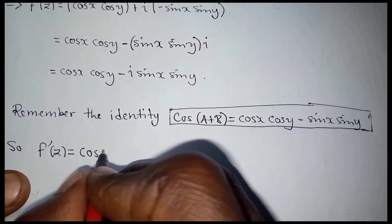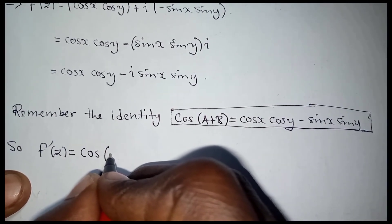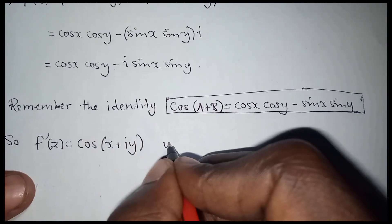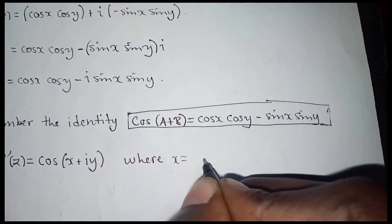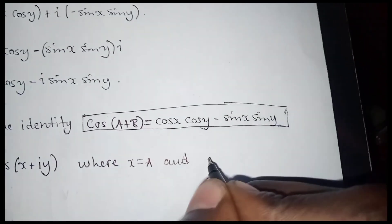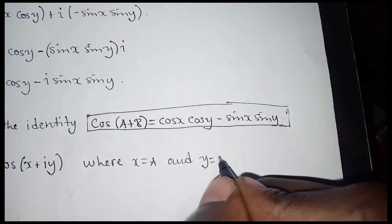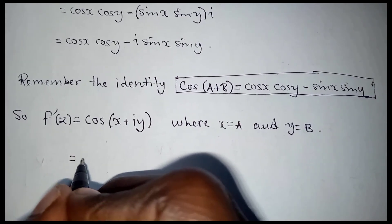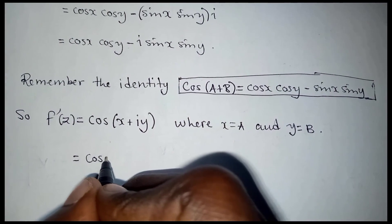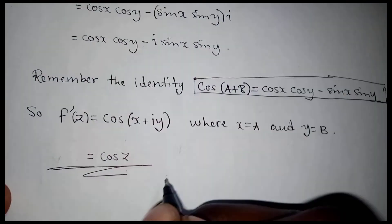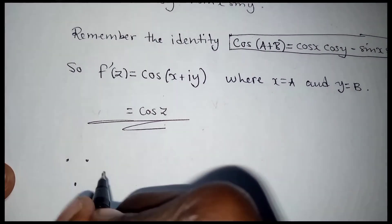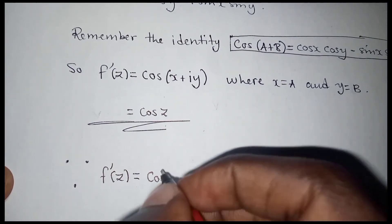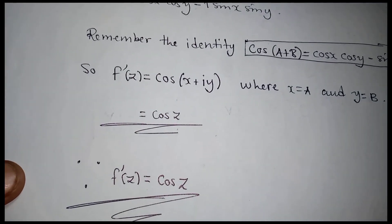So f prime of z is equivalent to cos of (x + iy). Since x plus iy equals z, cos of (x + iy) can also be written as cos of z. Therefore, the derivative of f(z) equals cos of z. That is your final answer. Thanks for watching.